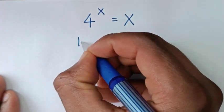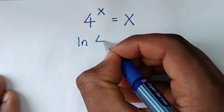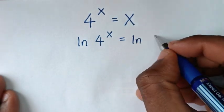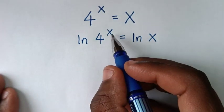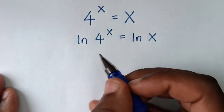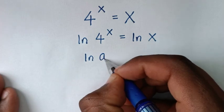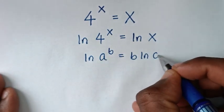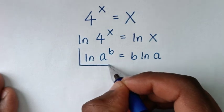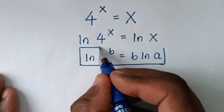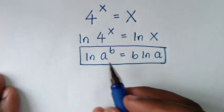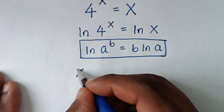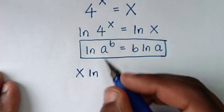So it will be ln of 4 to the power of x is equal to ln of x. This is in the form of ln(a^b) which is equal to b times ln(a). Applying this rule, the power of x will move down, so it will be x times ln(4).